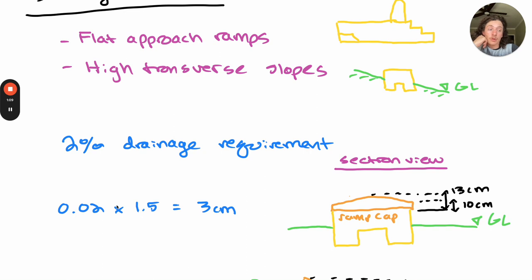If you do the math, 0.02 times 1.5 is equal to 3 centimeters. Remember we're using half the ramp width, which is a 13 centimeter crown to the ramp wall.